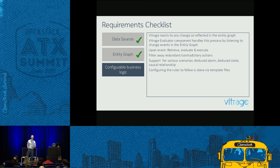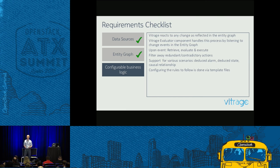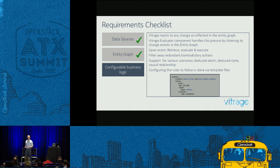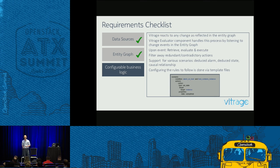The third requirement is configurable business logic. Vitrage must react to any change in the graph. Every time we have a new instance or new alarm, it's reflected in the Vitrage graph. We have the Vitrage evaluator, which listens to the graph and upon each event evaluates which scenarios are relevant and what action to take. The scenarios are stored as templates — we call them Vitrage templates — which are YAML files, very human-readable. For example: condition: alarm on the host and host contains instance; action: set the state of the instance to suboptimal. Very readable and easy to configure.